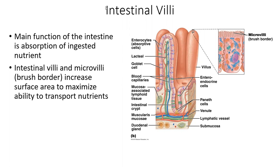Inside the small intestine, mainly the jejunum, this is where absorption occurs. You have intestinal villi and then microvilli on the surface of cells. This increases the surface area, making it more efficient at absorbing nutrients. There is a lot of vascularization — blood vessels flowing through. The microvilli increase the surface area of the plasma membrane at the brush border on the individual cell, maximizing the absorption of nutrients.